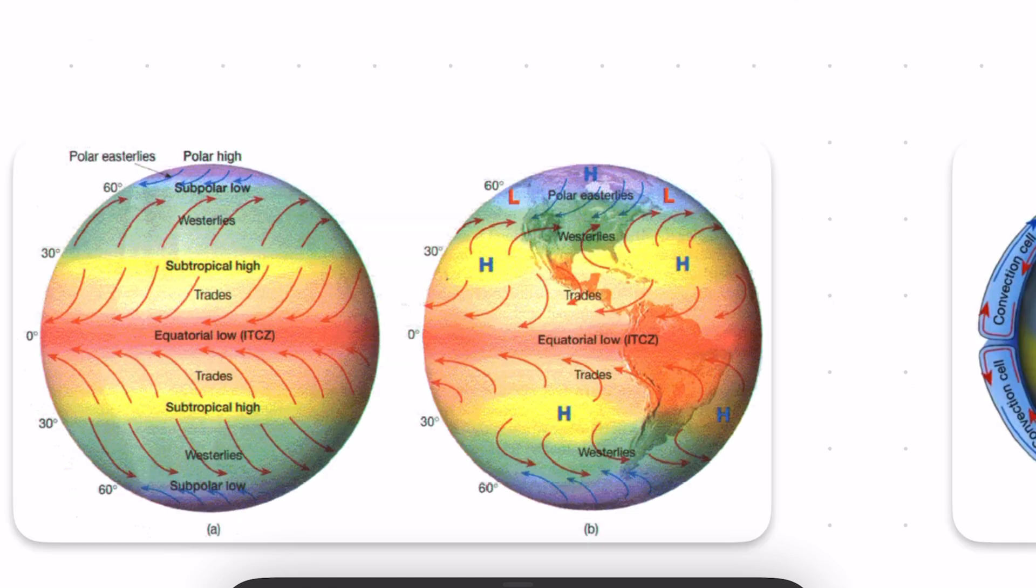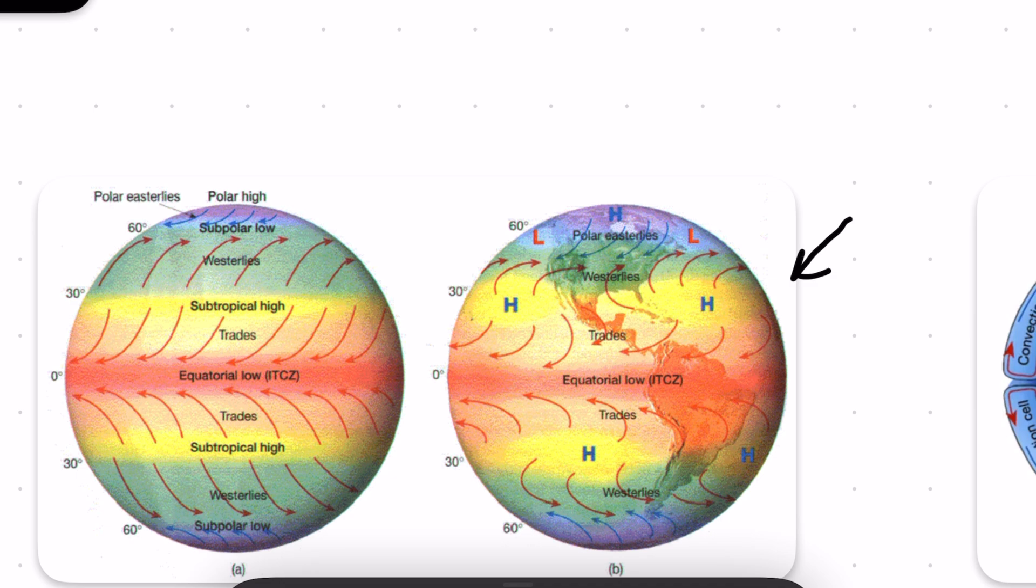And that results in the Gulf of Mexico essentially piercing a hole in this high pressure band that should exist here. And that break in this high pressure band combined with the prevailing winds bring moisture up into the southeast.